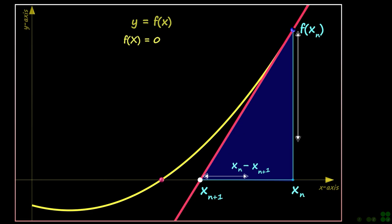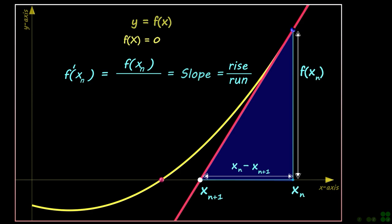Remember, the slope of the tangent line to the function is equal to its first derivative at a given point. Focusing on this blue triangle, we can write an equation for the slope of the tangent line. So the derivative of the function at f of xn can be written in this form.